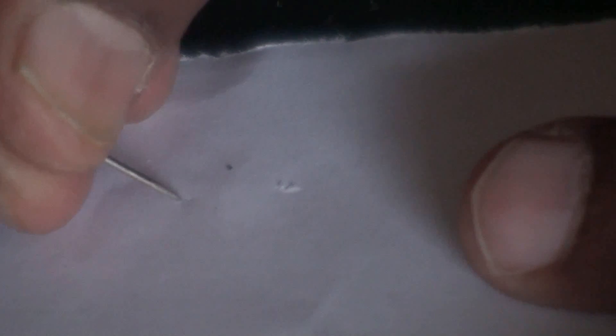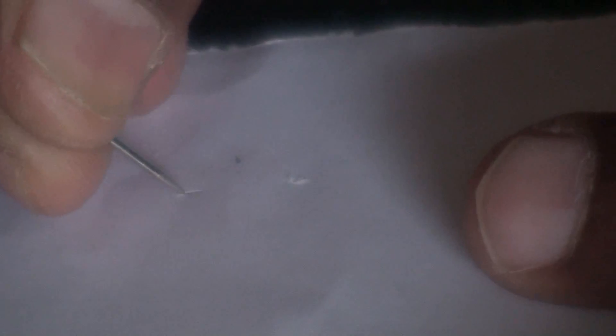Next, set up the two slits by scratching the white paper to make two thin lines closer to each other. It should be small enough to be covered by the laser beam.